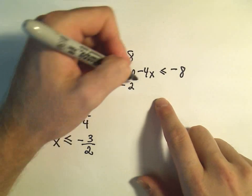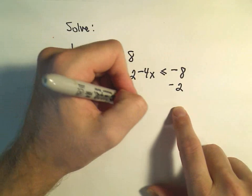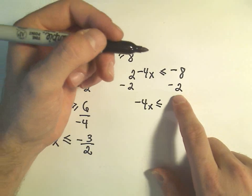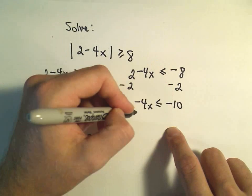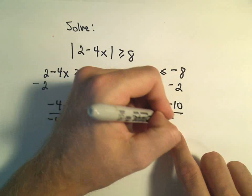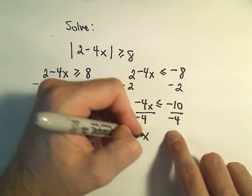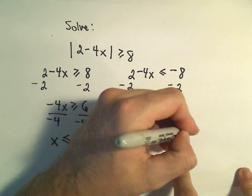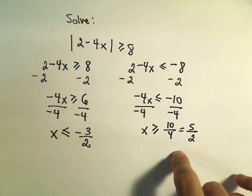The other solution, we could subtract 2 from both sides. We would get negative 4x less than or equal to, so negative 8 minus 2 is negative 10. If we divide both sides by negative 4, we'll get x greater than or equal to positive 10 fourths, or if we reduce that to 5 halves.